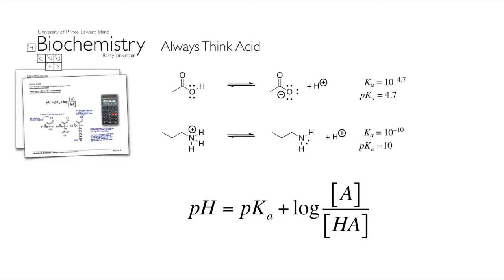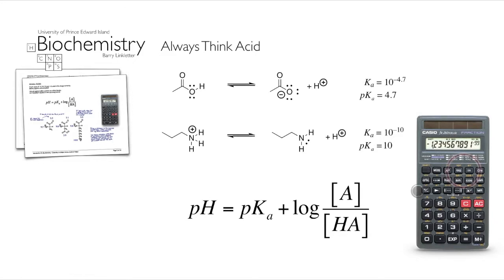Remember the Henderson-Hasselbalch equation. We will know the pH — you're in charge of this experiment. We will know the pKa because that's just on a list of tables — a known value for all amino acids. The only thing we don't know is whether it's in its acid form or its basic form and what the ratio is. If you know the pH and the pKa, you should know what this ratio would be. The key to all of this is the log key on your calculator — we'll be practicing this, so make sure you know how to use it.